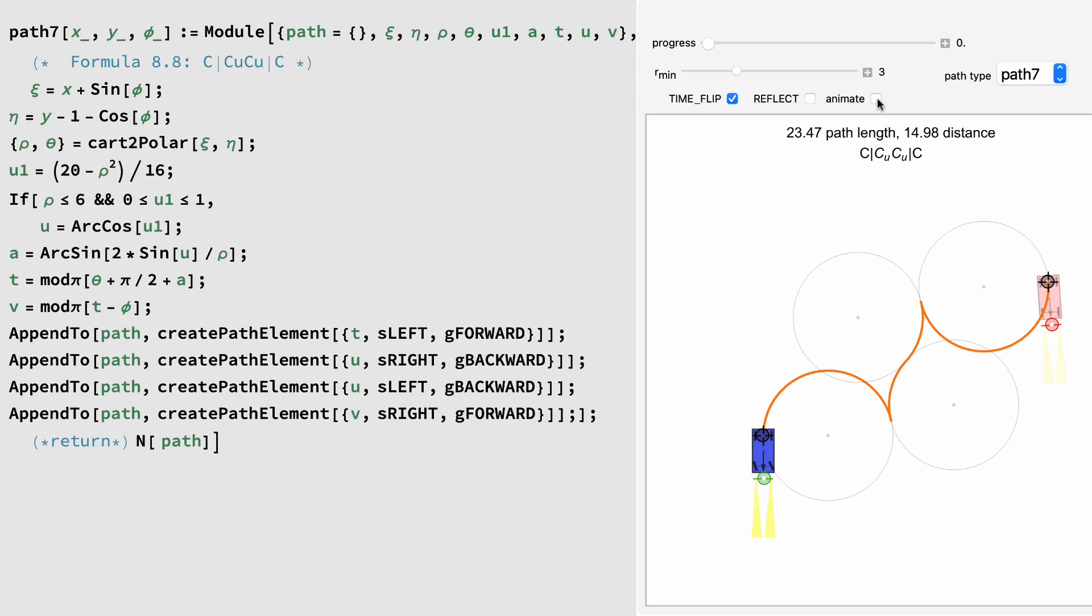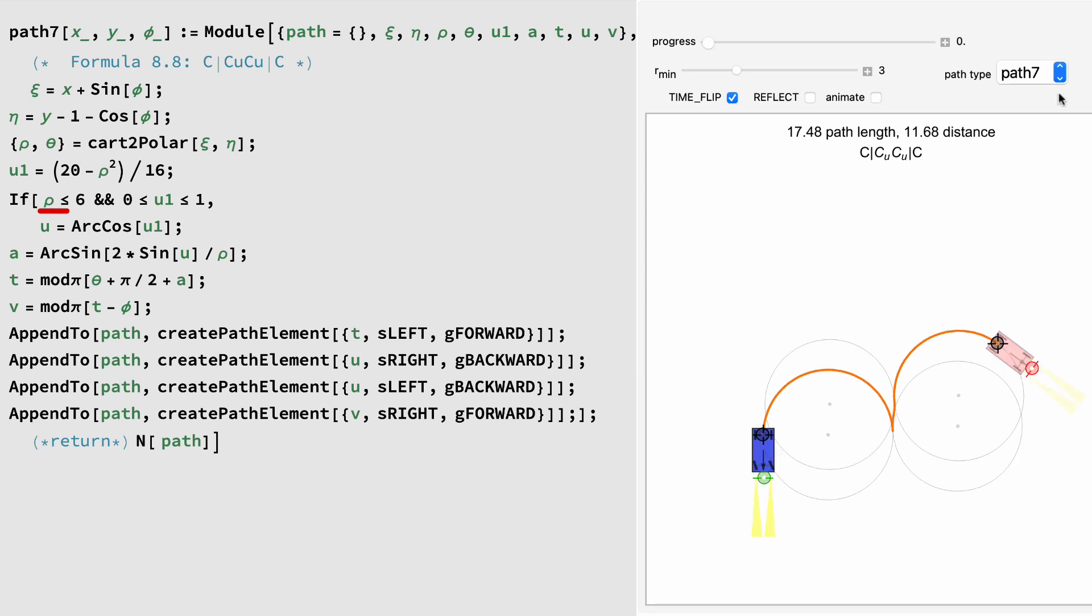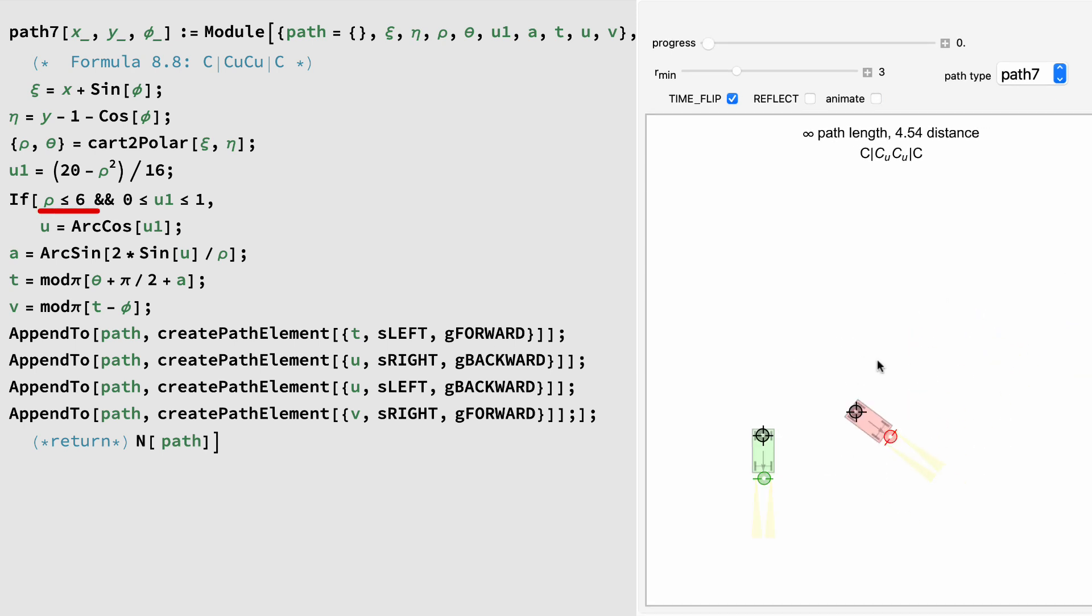Path 7 is a curve, a gear switch, two curves that has the same length but opposite directions, a gear switch, and another curve. This is the longest code. It doesn't exist if the distance is not between 0 and 6.